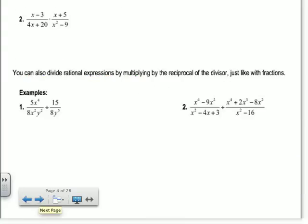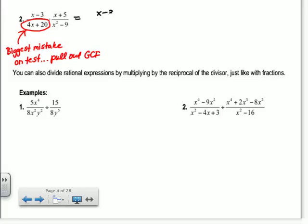So I have x minus 3 over 4x plus 20, and then I have x plus 5 over x squared minus 9. This is where the biggest mistake comes from. So on the test, whenever I grade these, this is the biggest mistake. So people will look at that, and they won't realize that it factors. Take out a 4. So a lot of people will look at that, and they won't know it factors. And then they'll just keep it, and they'll have huge polynomials they're trying to multiply. So pull out the 4.